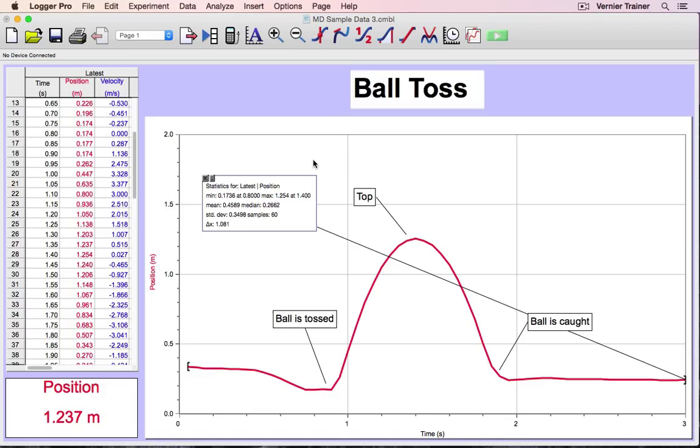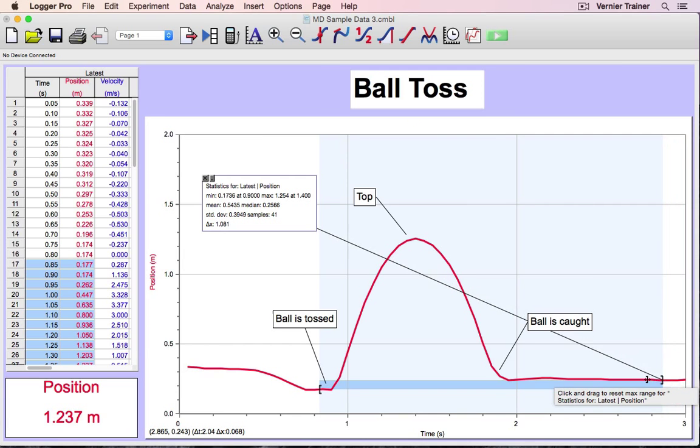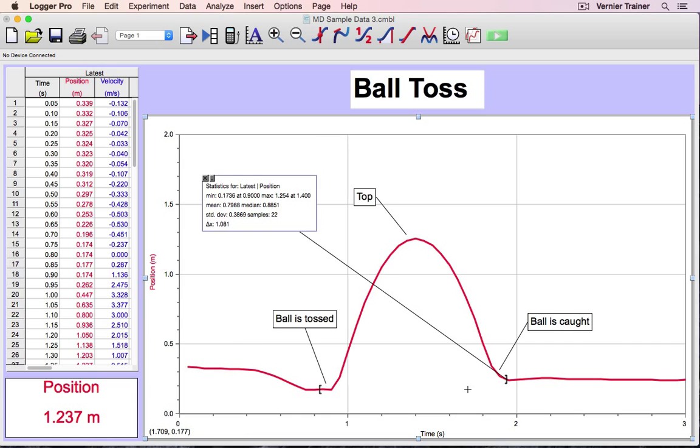As I've done it here, these statistics apply to all the data shown on this graph. If I want to narrow that down to a particular region, I can click and drag these black brackets. The black brackets show how much data is included in the statistics.